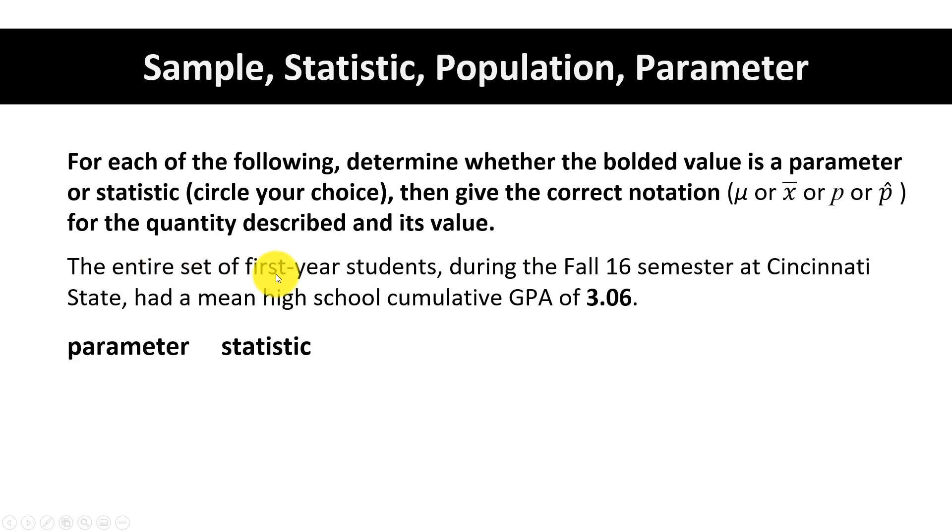This number is describing that population, so this is a parameter. Now this number is the mean, so the population mean symbol is μ (mu), so we say that μ equals 3.06.